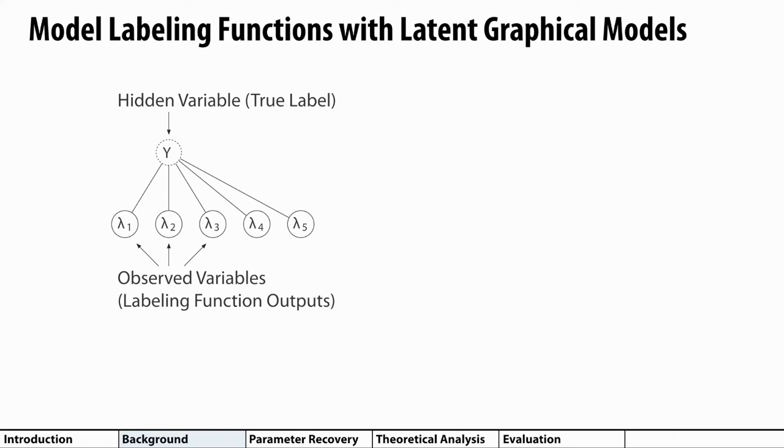In this formulation, we view labeling function outputs and the true label as random variables, some of which are observed and some of which are hidden. For example, this particular graph says that the labeling function outputs are correlated with a hidden true label, but the errors in labeling function outputs are independent of each other. The nice thing about this graphical model formulation is that it's quite flexible.